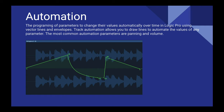Automation is probably one of my most favorite things that we do with audio and pro audio in a digital audio workstation. I constantly talk to my students about how automation is the key to making things really interesting and beautiful in your soundscapes and in your music. Automation is the programming of parameters to change their values automatically over time in Logic Pro or any DAW — because every DAW has automation — using vector lines and envelopes. Track automation allows you to draw lines to automate the values of any parameter. The most common automation parameters are panning and volume.